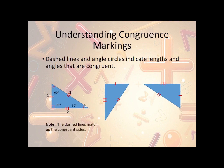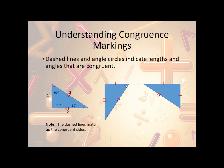Now, same thing with the angles. Notice we have arcs here. If it's a 90 degree angle, then we put a box; otherwise it would be an arc. We could have a single, double, or triple arc to represent those angles. So we have our 90 degree angle here, which matches up with this one here. Then we have our single arc, which goes here, and our double arc, which goes here. That indicates that this angle and this angle are congruent, this angle and this angle are congruent, and this angle and this angle are congruent. The arcs match up the congruent angles.